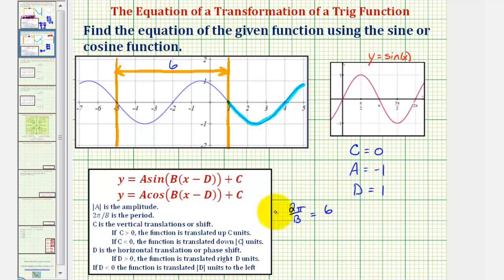Which means two pi divided by b must equal positive 6. So two pi divided by b equals 6, multiplying both sides of the equation by b, we have two pi equals 6b. Dividing both sides by 6, we have b equals two pi divided by 6, or pi divided by 3.